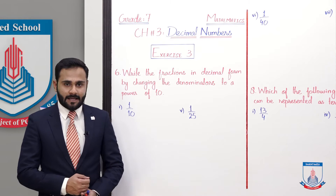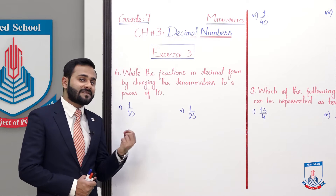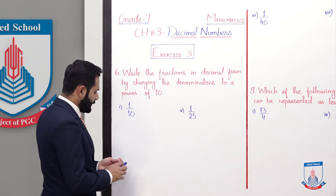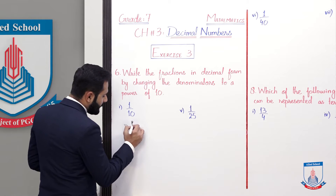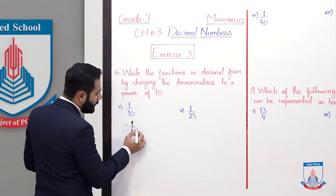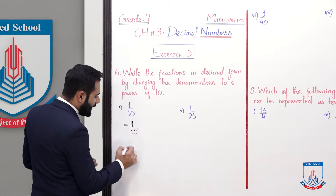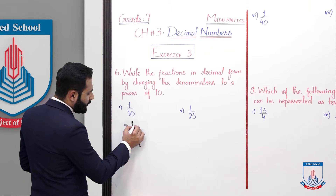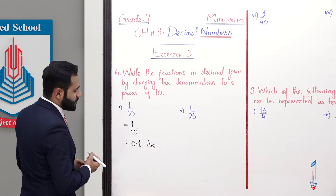The first question is 1 by 10. Yahaan par denominator mein already value 10 ki power mein mojood hai - basically 10 ki power 1 hai. Jitni bhi 10 ki power mojood hoti hai, hum utne digits point ko peeche lekar aate hain. So point 1 digit peeche aayega aur decimal form ban jaayegi 0.1. This is the decimal form of this fraction.